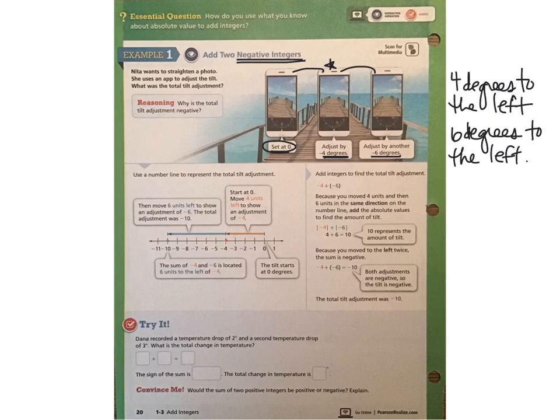So now the question is, how far is her total adjustment? So if she went four degrees to the left and six degrees to the left, how far has she gone altogether to get her final picture, which looks pretty straight? So we can use a number line to represent the total tilt adjustment. The first thing that we do is we start at zero. So this is step one. The tilt starts at zero degrees. So we go to the first adjustment, which is this right here, and she moves four units to the left to show that negative four.